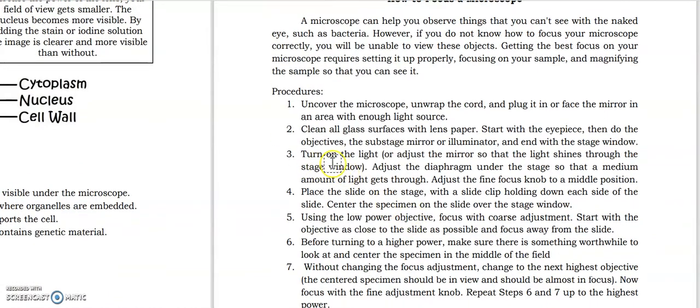Then third is to turn on the light or adjust the mirror so that the light shines through the stage window. Adjust the diaphragm under the stage so that a medium amount of light gets through. Adjust the fine focus knob to a middle position. Fourth is to place the slide on the stage with a slide clip holding down each side of the slide. Center the specimen on the slide over the stage window.